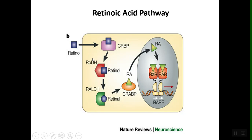To sum it up, retinol gets converted to retinal, then to retinaldehyde, and then to retinoic acid. Once we get to retinoic acid, CRABP will find it and bind to it — this is in the cytoplasm. Once CRABP binds retinoic acid, it will bring it into the nucleus. When retinoic acid is in the cytoplasm, it doesn't do anything. CRABP is therefore very important.